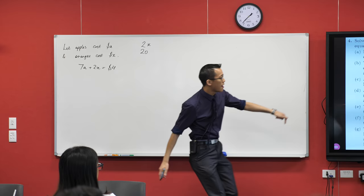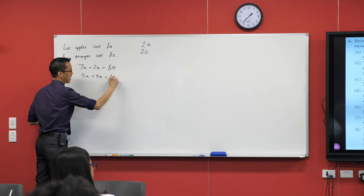Then we've got a second one. Five apples, four oranges. Five apples, four oranges. And I think it's $4.40. Is that what it is? Yep.